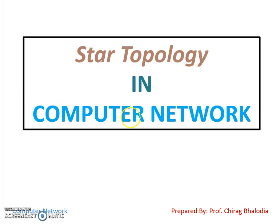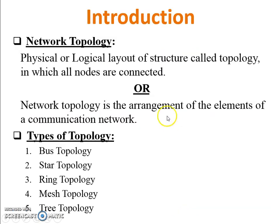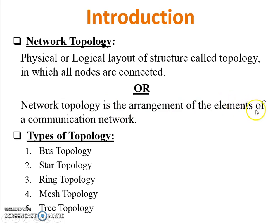Hello friends, myself Chirak Balodia. Today I'm going to teach you star topology in computer networks. The definition of network topology is the physical or logical layout or structure, called topology, in which all nodes are connected with each other. Another definition is: network topology is the arrangement of elements — elements meaning workstations or pieces of a communication network.